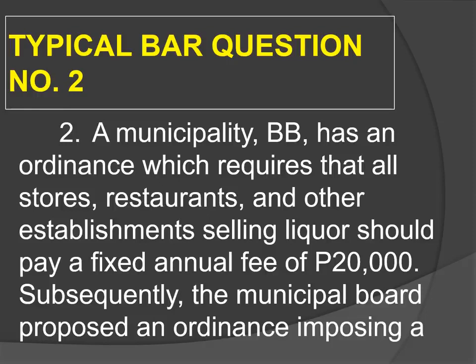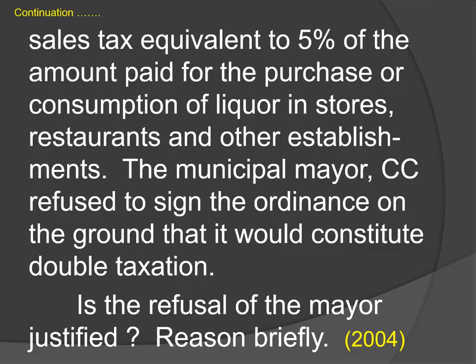Let's look at another problem. It seems different but the concept is still the same. Go to the bottom because it's longer. The question is: is the refusal of the mayor justified? The municipal mayor refuses to sign the ordinance on the ground that it would constitute double taxation. So you remember outright that the mayor is thinking this is direct duplicate taxation. You try to reflect on the elements of direct duplicate. If all are present, then the mayor is correct. But if one of the elements is absent, then the mayor's refusal is not justified.